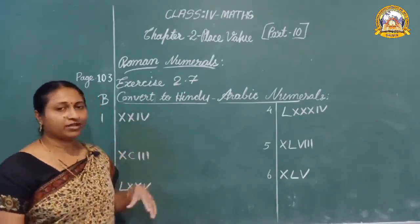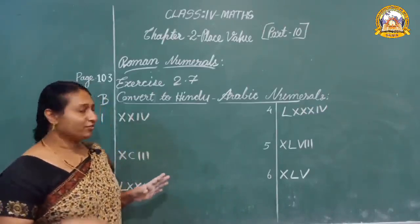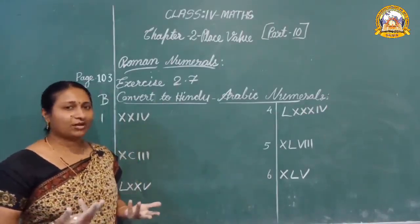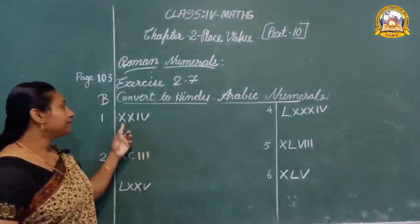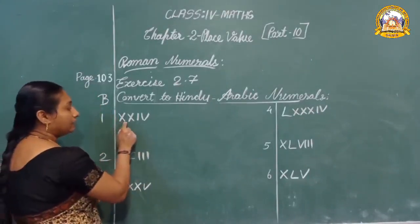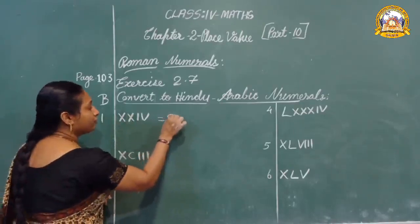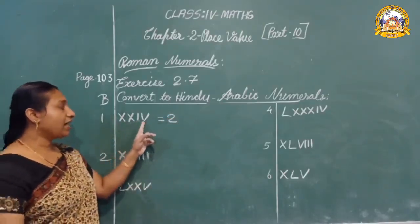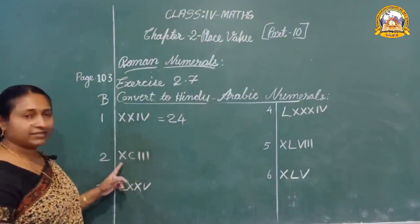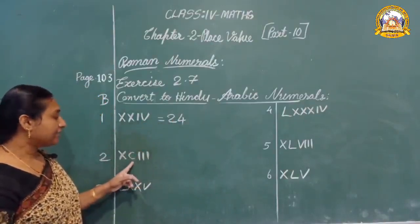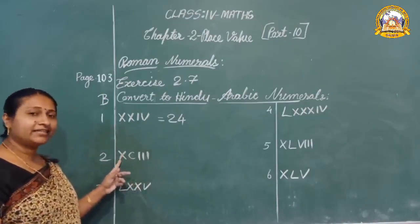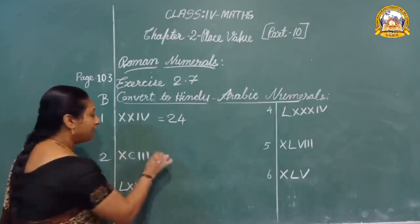The next question is to convert to Hindu-Arabic numerals — our own numbers that we use in India. Here, first: double X means 20, and IV is 4 — so that is 24. Next, XC means 100 minus 10 — that is 90. So XC plus III is 93.